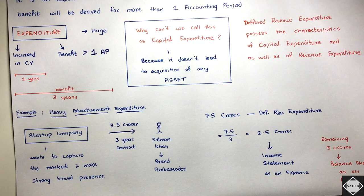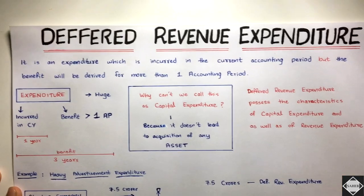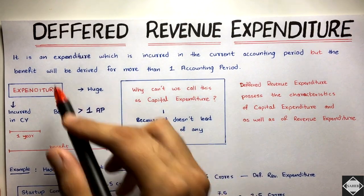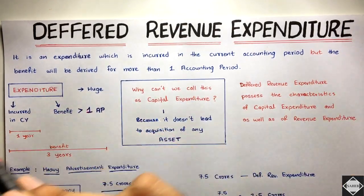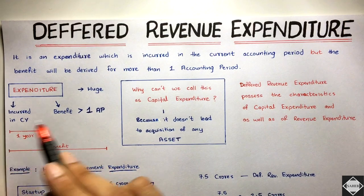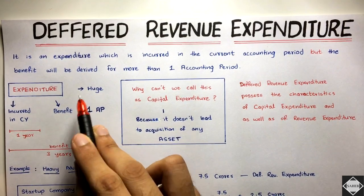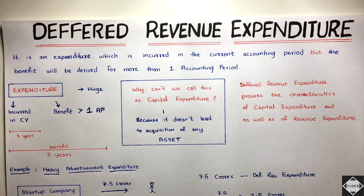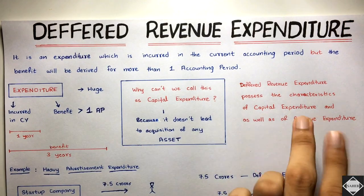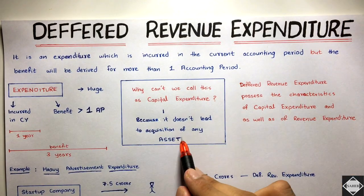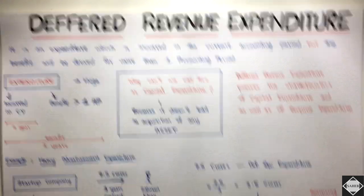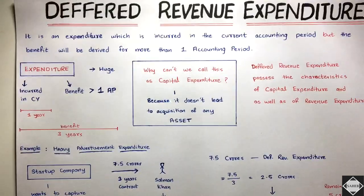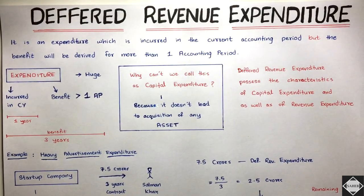So that's all about deferred revenue expenditure. Whenever someone asks you, remember: it's an expenditure incurred in the current year, the benefit is more than one accounting period, it is huge, it doesn't lead to acquisition of any asset, and it has characteristics of both capital and revenue expenditure. The accounting treatment is to divide by the benefit period and write off to the profit and loss account each year. See you in the next video, bye.